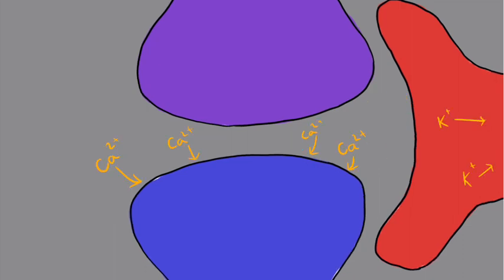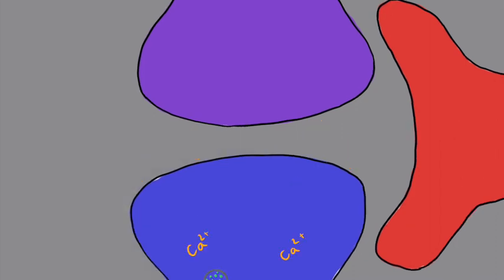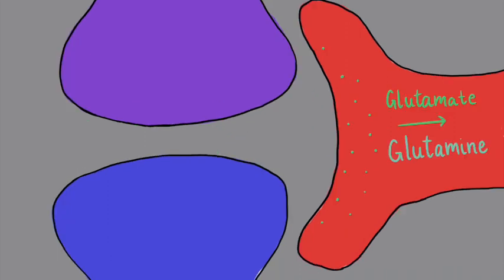When the action potential reaches the synaptic terminal, calcium will flow into the presynaptic compartment and allow for vesicles carrying neurotransmitters to be released into the synaptic cleft. In this example, glutamate is released, which binds to the receptor on the postsynaptic partner, triggering another action potential, and the whole cycle repeats. Annie helps recycle the glutamate by vacuuming it up and transforming it into glutamine, which is then given back to the neuron to be recycled into glutamate or used for other cellular processes.